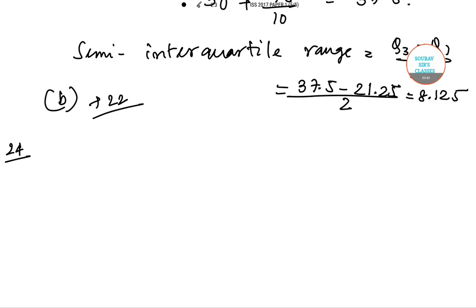In a series of 2N observations, half of them equal to K and the remaining half equal to minus K. If the standard deviation of the observations is 2, then what will be the value of mod K?